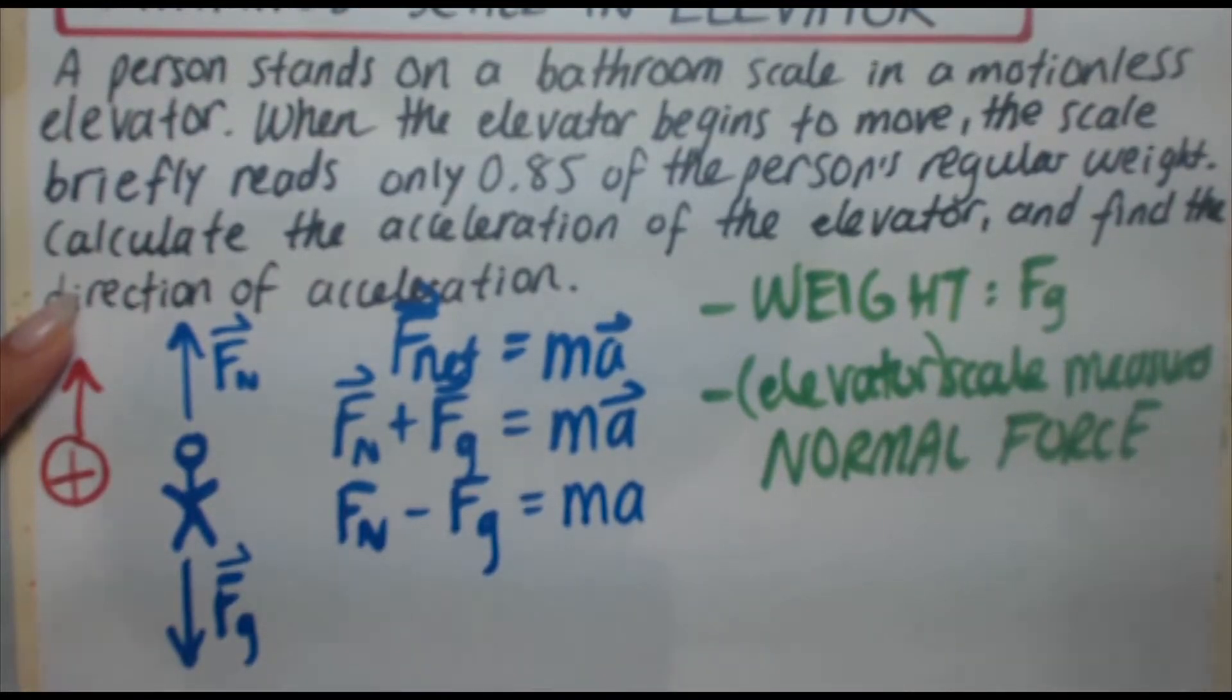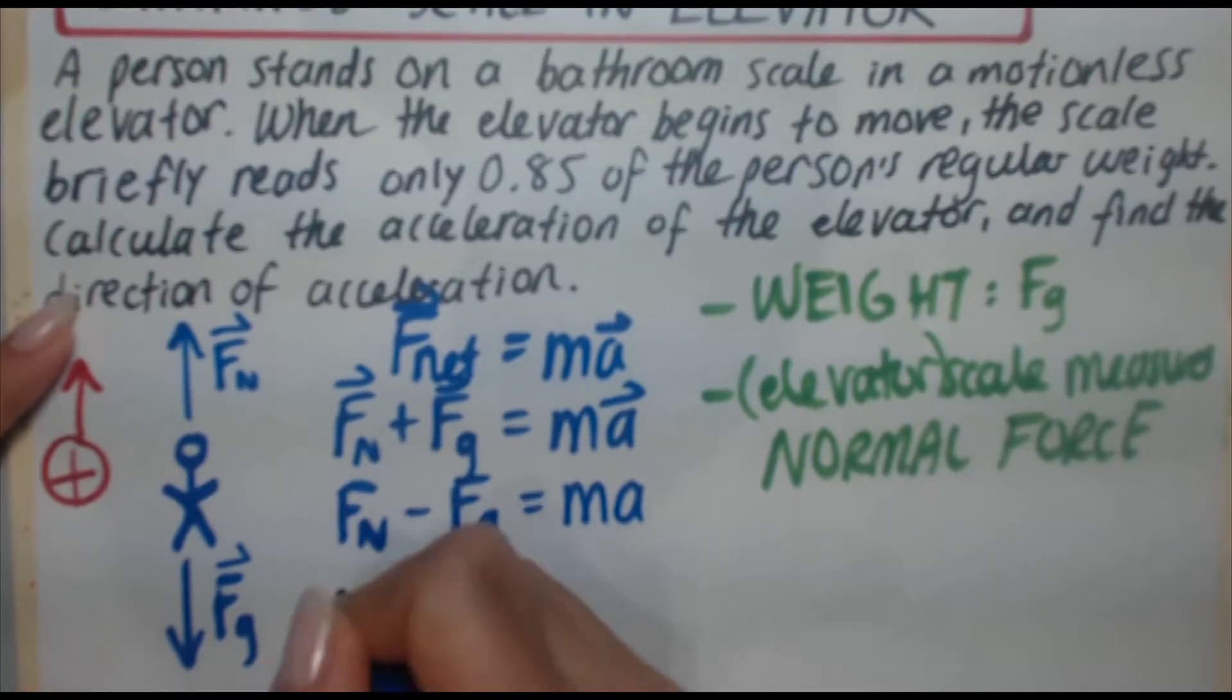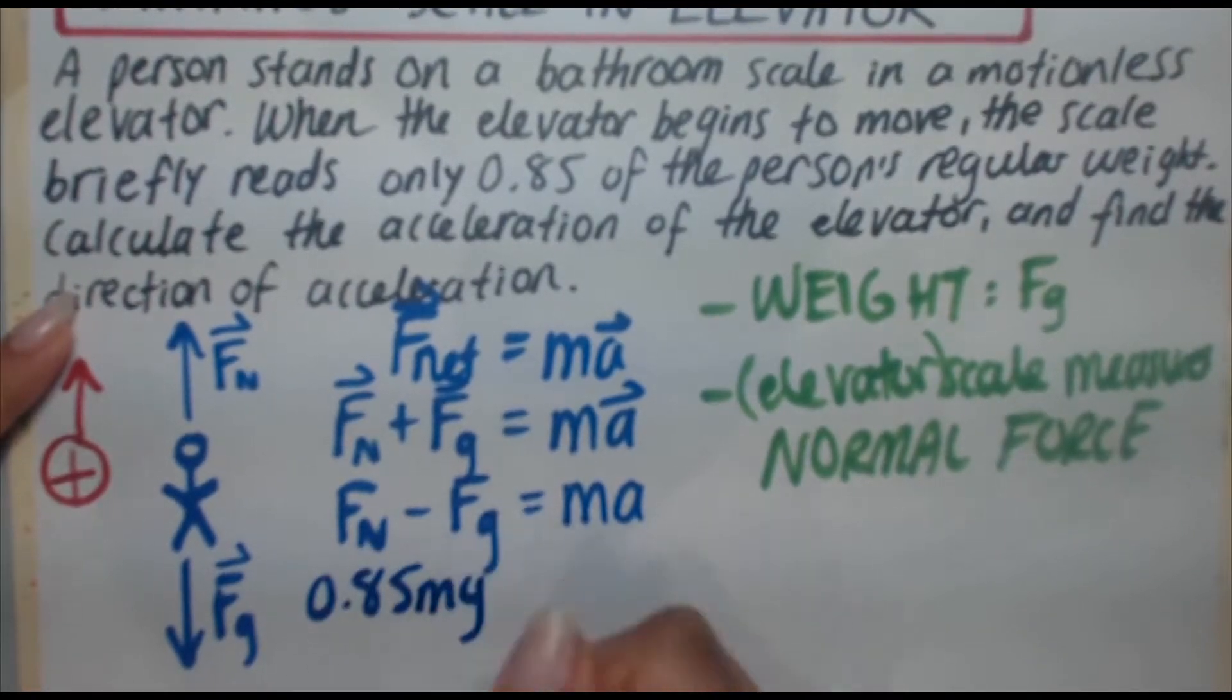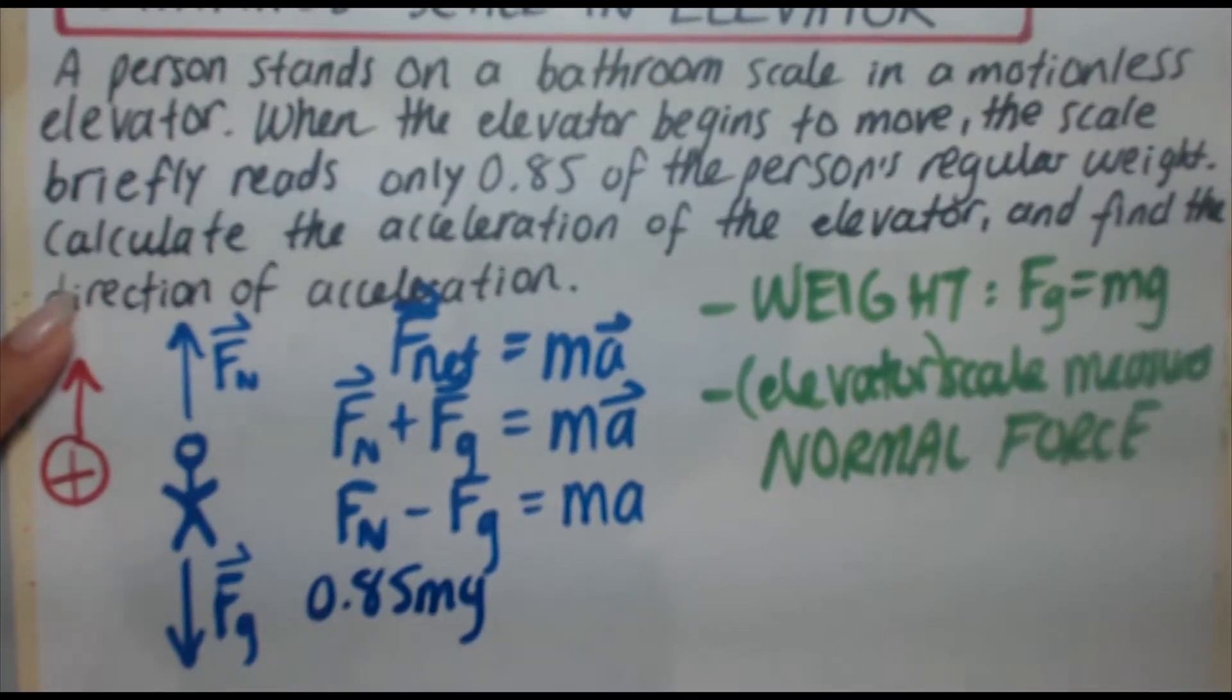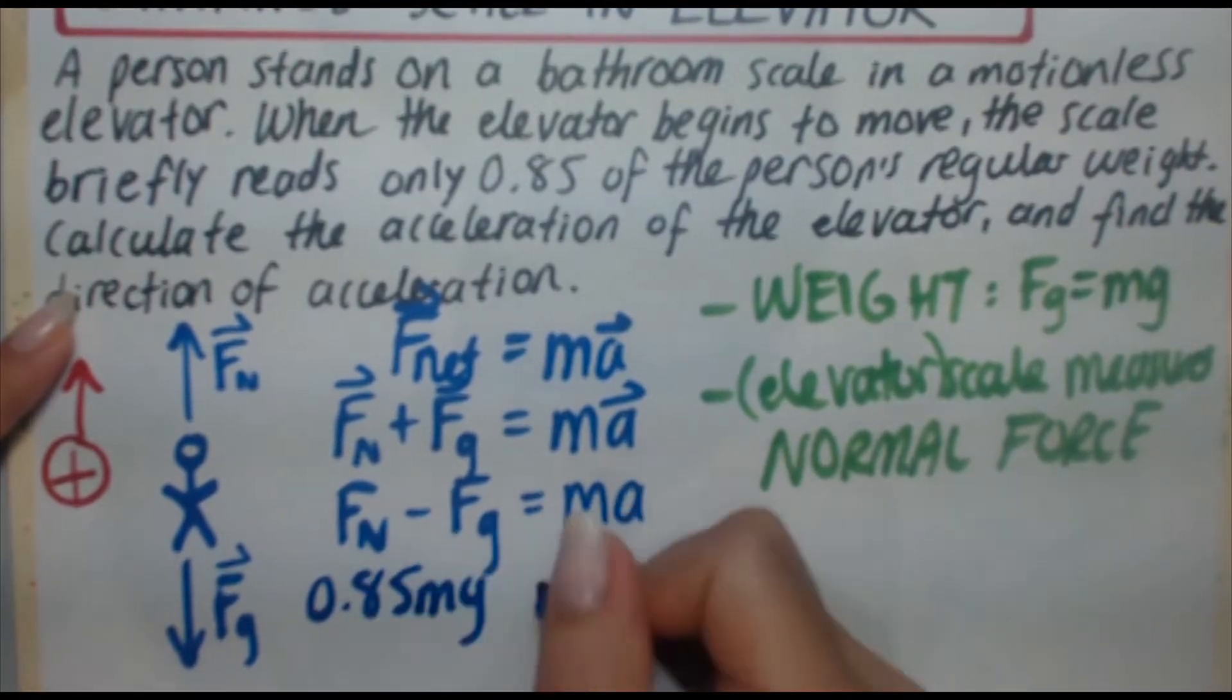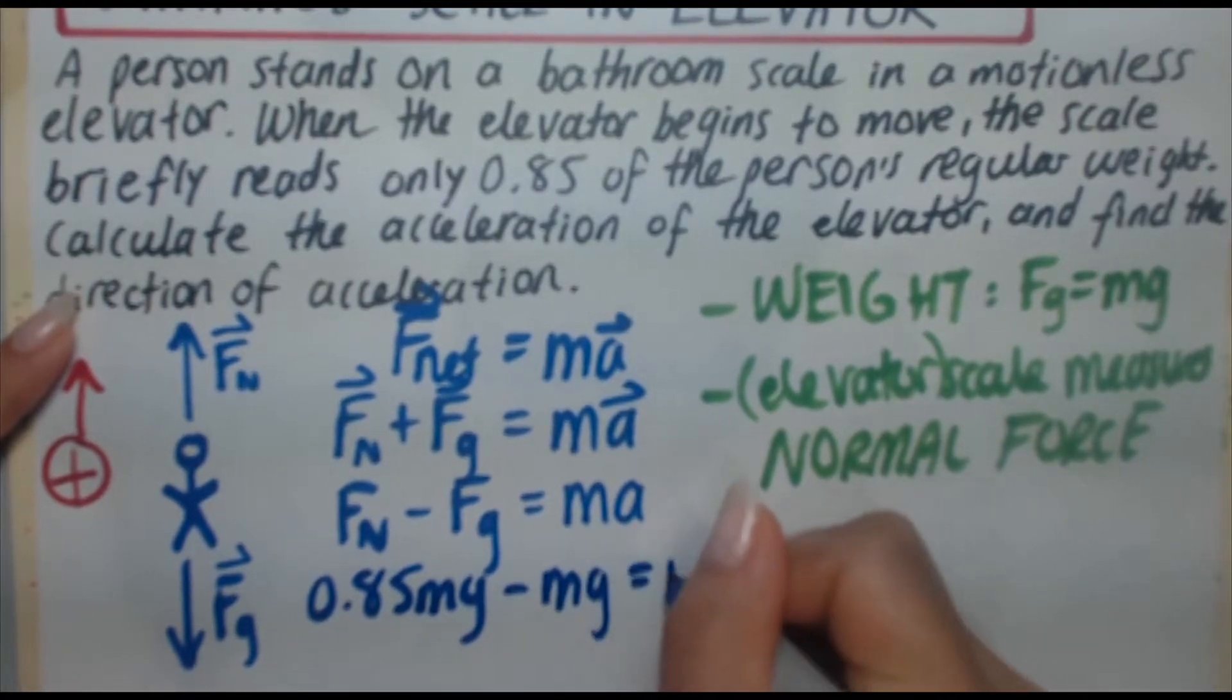Okay. So, we're going to replace this F_n with 0.85mg because that is, after all, what F_g is equal to, mg. So, 0.85mg minus mg equals ma.